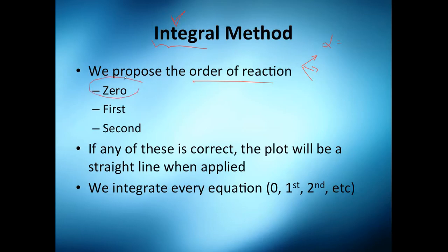So maybe we find that it doesn't fit our models, we will need to fit other data. But in this part of the course we're not going to see that, only zero, first, and second orders. If any of these are correct, the plot will be a straight line when applied.